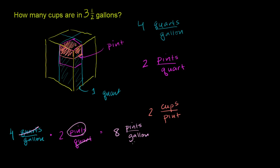And then we can multiply that times 2 cups per pint. So let me copy and paste this. So now you multiply this times 2 cups per pint.